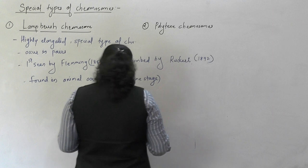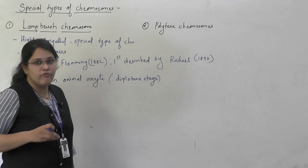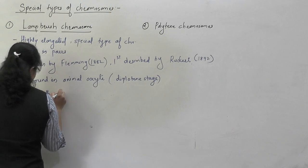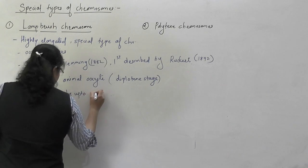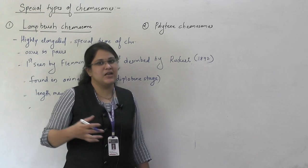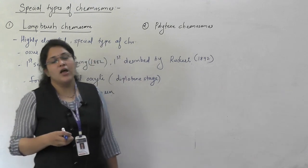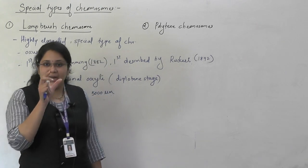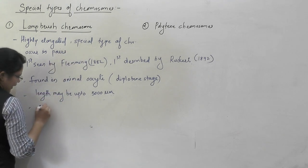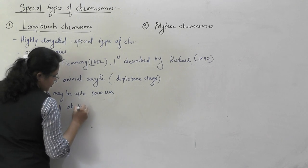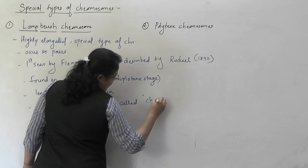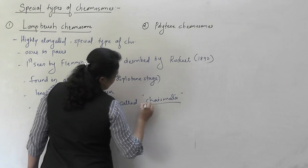These chromosomes are found in animal oocytes at the diplotene stage. Their length may be up to 5,900 micrometers. These chromosomes occur in pairs and they are attached to each other at points known as chiasmata. They occur in pairs and are attached at special points called chiasmata. Chromosomes belonging to the same pair are called homologous chromosomes — homo meaning similar.